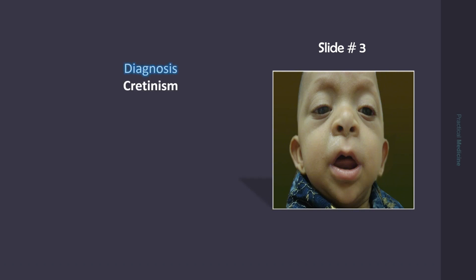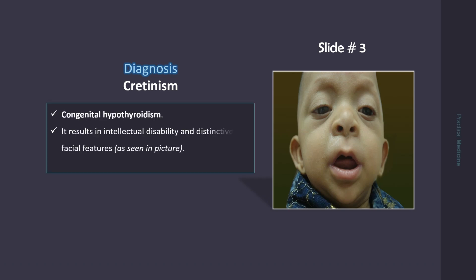This is the typical appearance of cretinism, seen in congenital hypothyroidism. The result is intellectual disability and distinctive facial features as can be seen in the picture. There is coarse skin with thick lips and large ears.